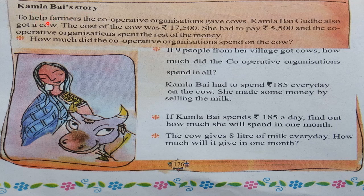To help farmers, the cooperative organizations gave cows. How much amount will be spent by the cooperative organization to purchase 1 cow for Kamla Bai? That means we have to do subtraction: Rs. 17,500 minus Rs. 5,500.